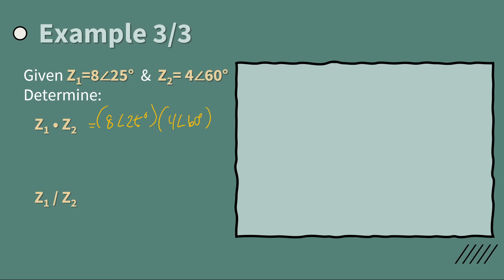So for the product, it actually follows this formula. Very simple, you just multiply the two modulus. So you have 8 times 4. And then the angle is just the sum of the two angles. So this is basically 25 plus 60 degrees.